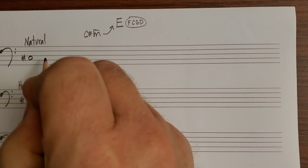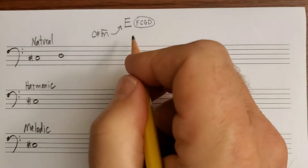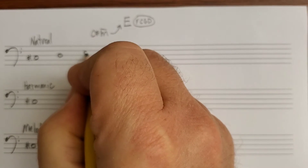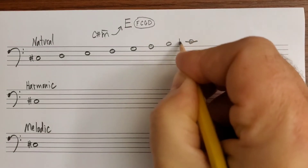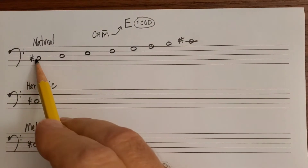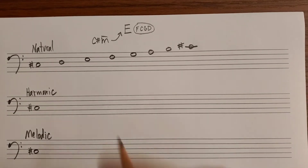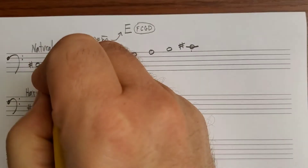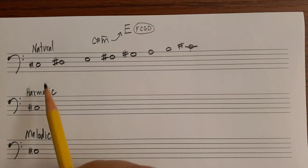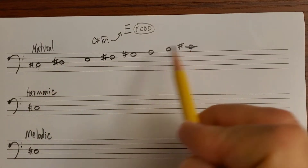To write natural minor on C sharp, simply write C sharp to C sharp and then mark in your accidentals: F, C, G, and D sharps. Make sure you end on the same pitch that you began on — if you start on C sharp, make sure you end on C sharp, as C sharp is your tonic note. So write in F sharp, C sharp is already there, G sharp, and D sharp. There's C sharp natural minor — the same notes as E major but starting on C sharp. Four sharps: F, C, G, and D.